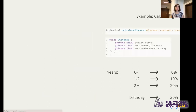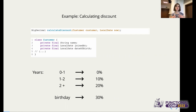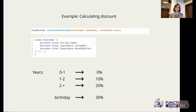The best way to start is with an example. Let's imagine a sample domain: we have a calculateDiscount method that takes an instance of Customer and a LocalDate for today. The Customer class has the customer name, the date when the customer joined, and their date of birth. The business logic is: if the customer has been with us for less than a year, they get no discount; between one and two years, they get 10%; more than two years, they get 20%. And to keep things more interesting, let's add a special birthday discount — on the day of the customer's birthday, they get a special 30% discount.